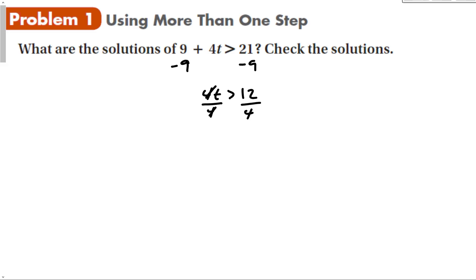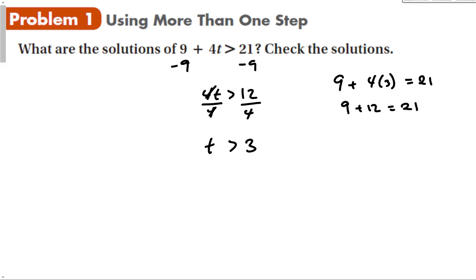This is not a negative number, so we just have that t is greater than 3. To check this, we verify: is 9 plus 4 times 3 equal to 21? And 9 plus 12 is 21 — yes, that's good. So now I should pick a number bigger than 3 to see if the inequality remains true.